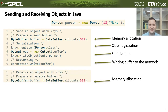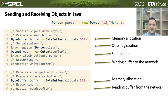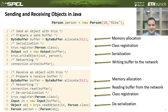The receiver would perform similar steps. It would need to allocate a receive buffer, then read this byte stream from the network into this buffer, and then perform deserialization, which is the process of reading this byte stream and reconstructing the sent object. As you can see, such a simple task as sending one object entails so many steps.